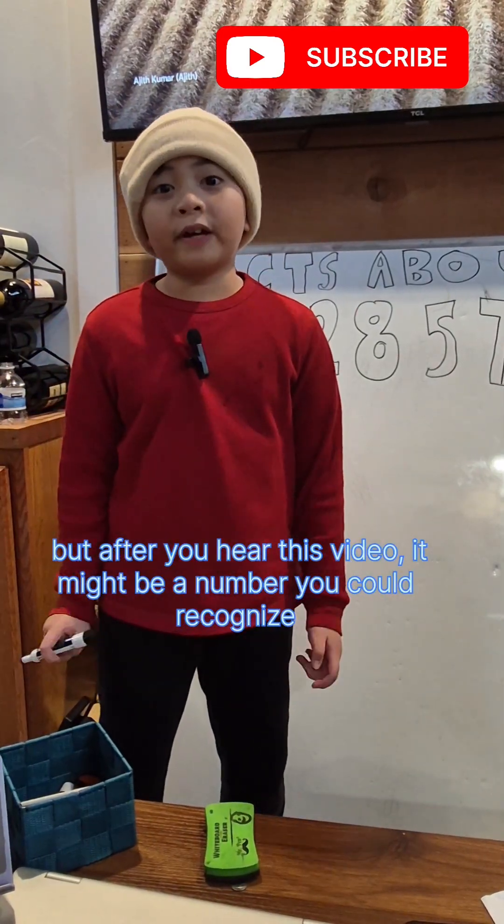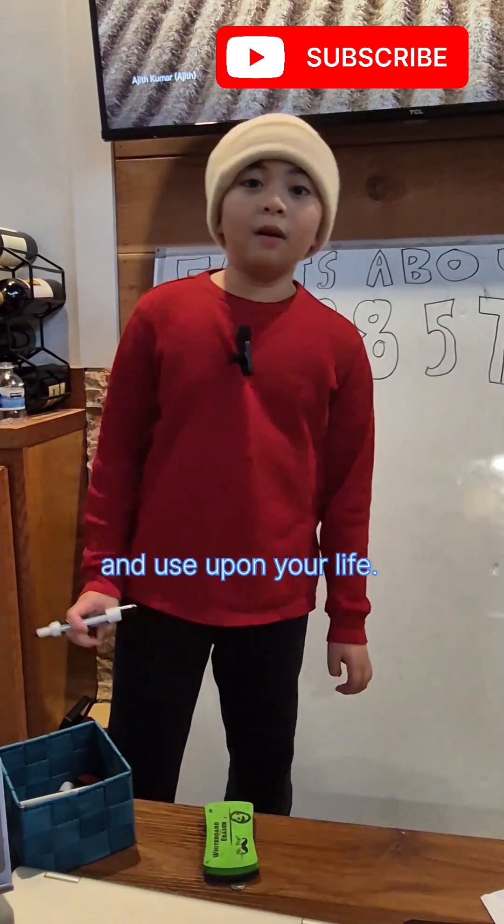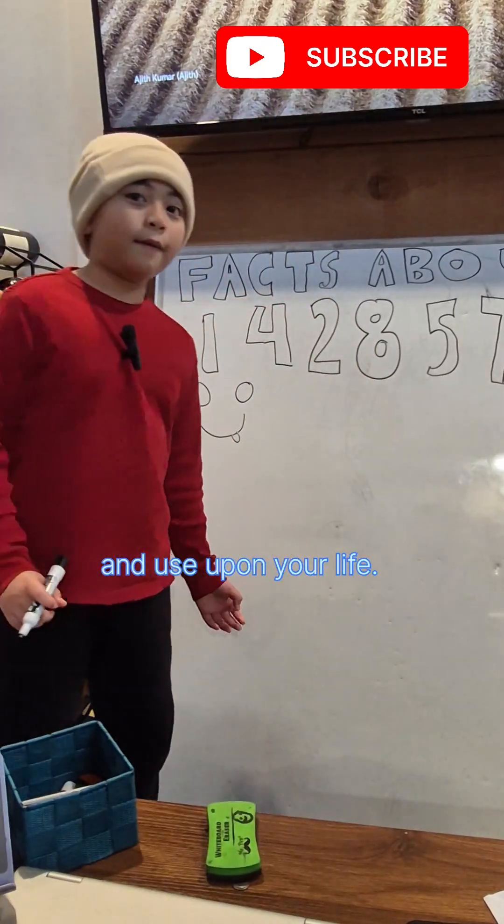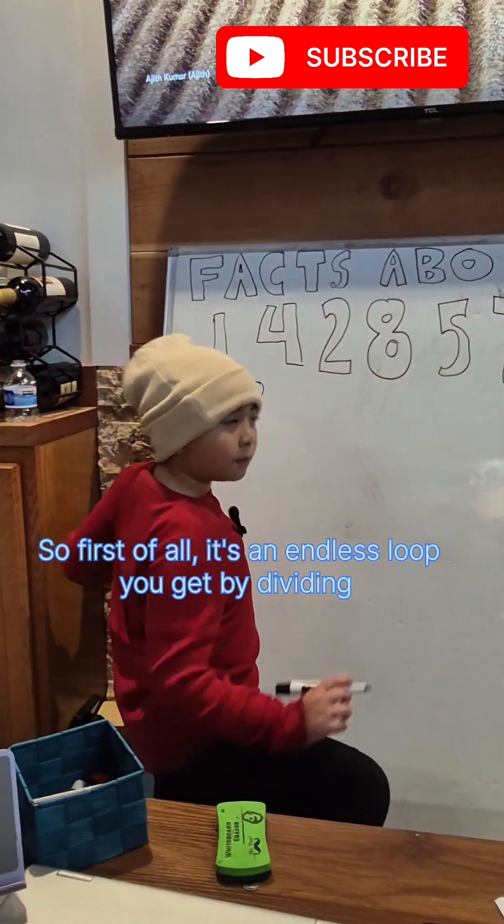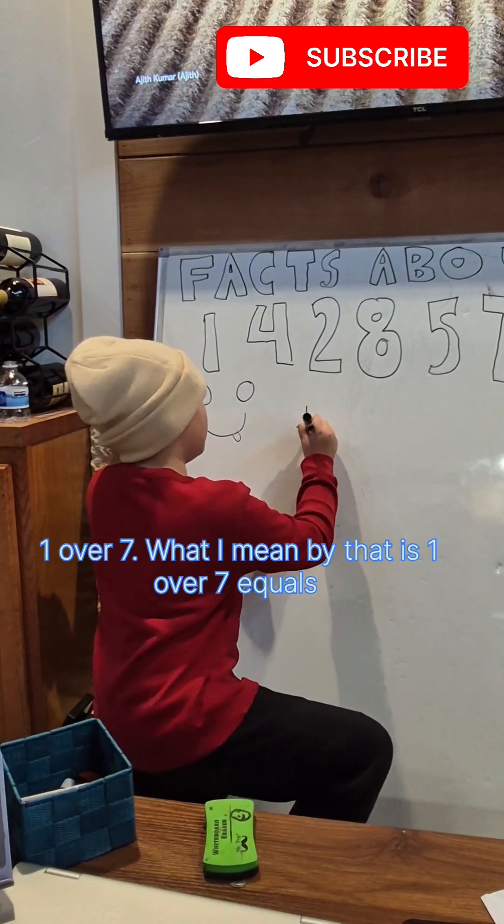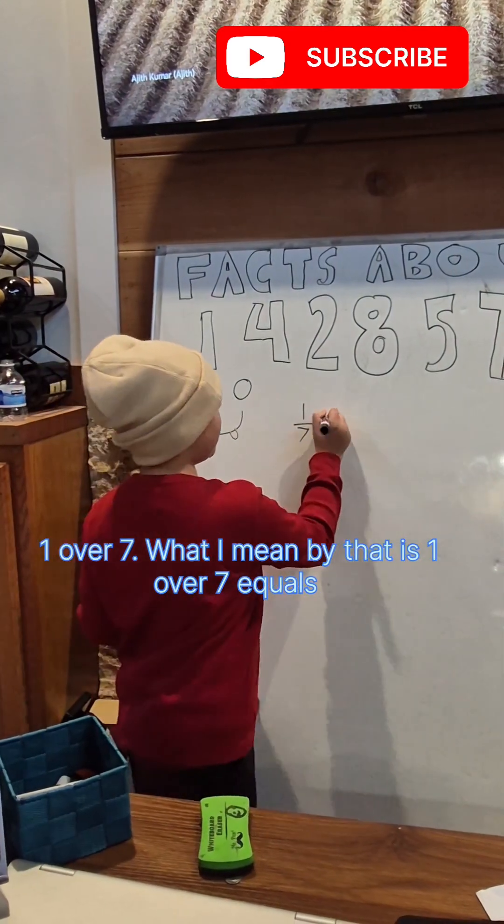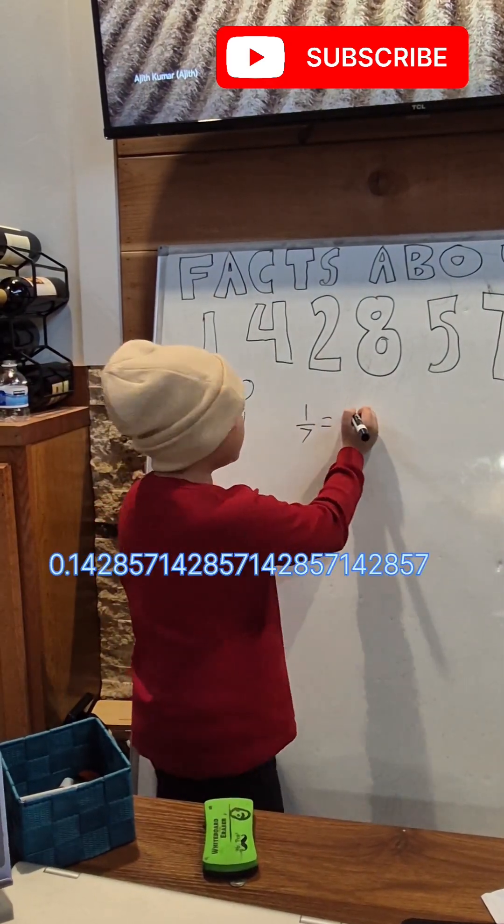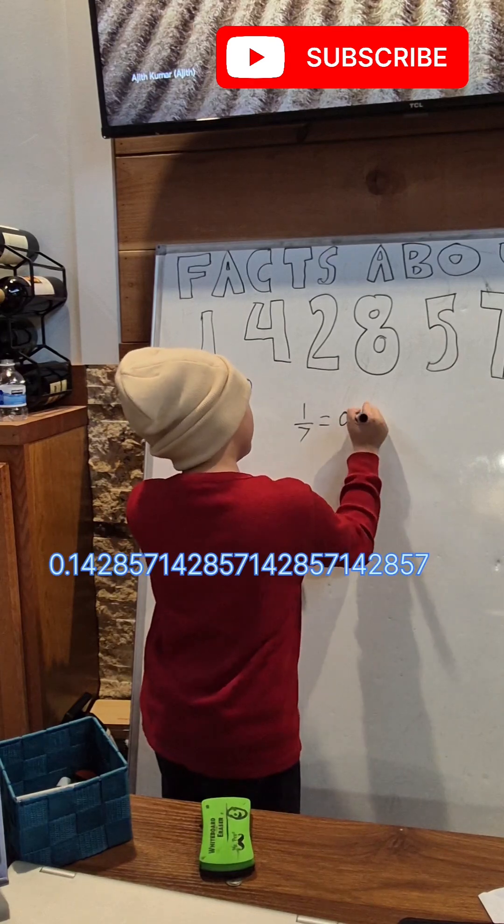be a number you could recognize and use in your life. First of all, it's an endless loop you get by dividing 1 over 7. What I mean by that is 1 over 7 equals 0.1